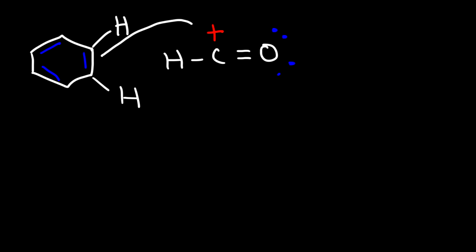And so now we have the reaction between benzene and the formyl cation. So this is going to be an electrophilic aromatic substitution reaction, where benzene is going to behave as the nucleophile, and the formyl cation will behave as the electrophile. So this double bond is going to attack the electrophilic carbon.